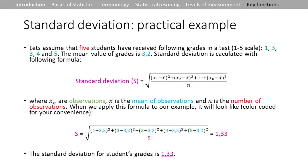On the practical side of calculating standard deviation: assume five students received the following grades on a scale of one to five — 1, 3, 3, 3, 4, and 5. The mean value of grades is 3.2. The standard deviation formula takes the square root of a sum. The x with the hat is always the mean, so you always subtract 3.2 in the formula.